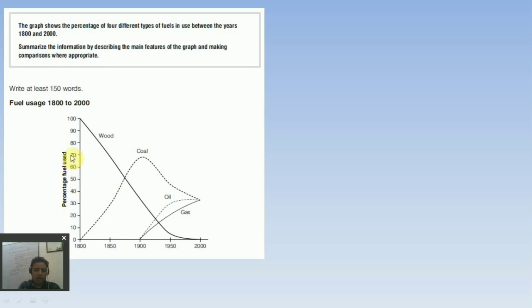You have been given four different types of fuels: wood, coal, oil, and gas. On your y-axis you have been given percentage fuel used. We can clearly see by the year 1800, 100% of fuel usage was of wood, and then with the passage of time this fuel usage decreased.